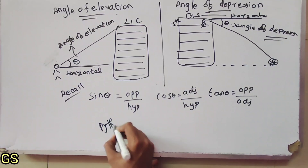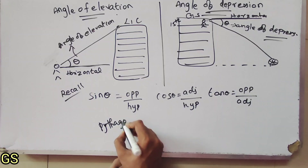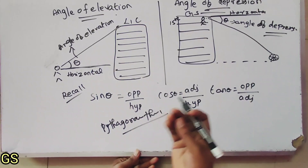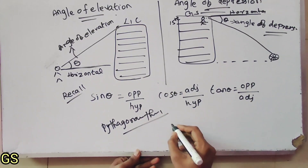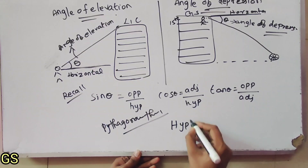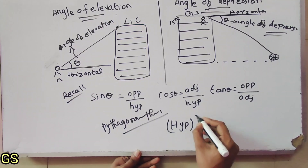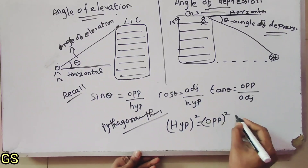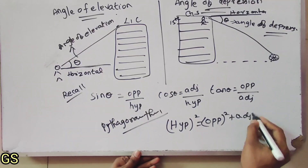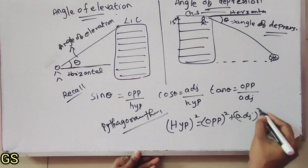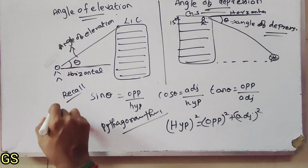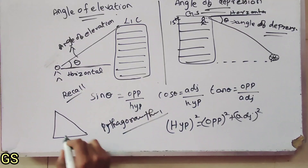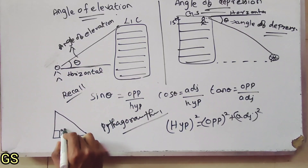Next, Pythagoras theorem. Hypotenuse square is equal to opposite square plus adjacent square. You can see the right angle triangle — a right angle triangle has a 90-degree angle.